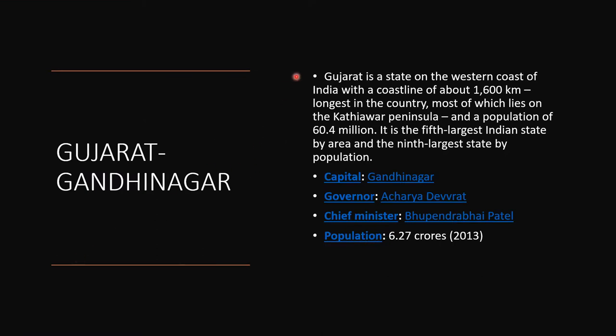The next one is Gujarat and its capital is Gandhinagar. Gujarat is a state on the western coast of India with a coastline of about 1,600 km — the longest in the country — most of which lies on the Kathiawar Peninsula, and a population of 60.4 million. It is the 5th largest Indian state by area and the 9th largest state by population. Capital is Gandhinagar, Governor Acharya Devrat, Chief Minister Bhupendra Bhai Patel, population 6.27 crores in 2013.